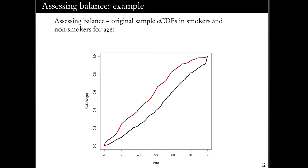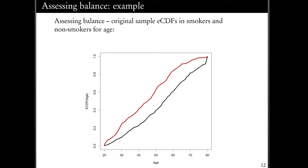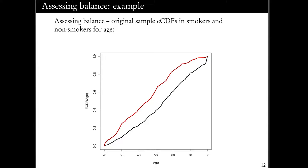For that one continuous covariate, I can plot an empirical CDF to see the distribution in smokers and non-smokers. While we don't have any measure of variability on this plot, my eyeballs tell me those distributions are not lying on top of one another — I see a difference in distributions, which tells me we have imbalance.